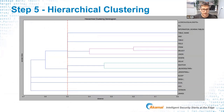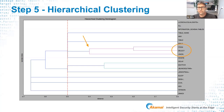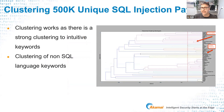Step 5 is hierarchical clustering. In our case study, 'SELECT' and 'FROM' were clustered together with a score of 0.2. Later, 'UNION' joined that cluster, changing the score to 0.4. The score represents the strength of association — a very low score means the keywords appear together very consistently and can confidently be used together. A high score suggests a weaker relationship.